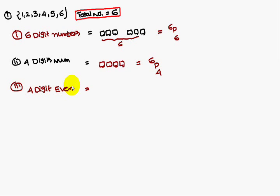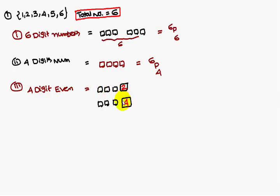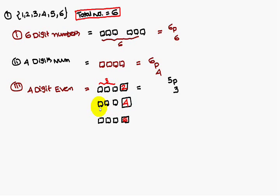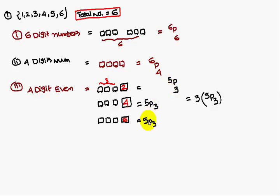Third problem: four-digit even numbers. A number is even if the ones place has 2, 4, or 6. Starting with 2 in the ones place: three blanks filled from remaining five digits gives 5P3. Similarly for ones place 4: 5P3, and for ones place 6: 5P3. So total is 3 times 5P3, that is 5P3 + 5P3 + 5P3.